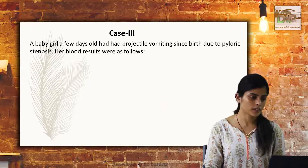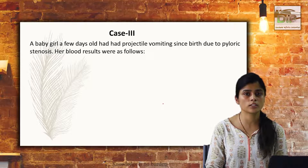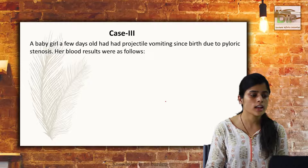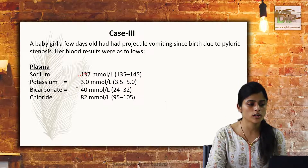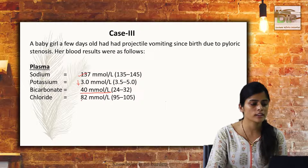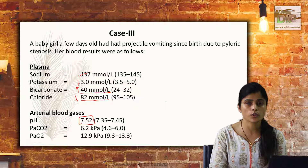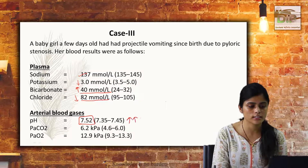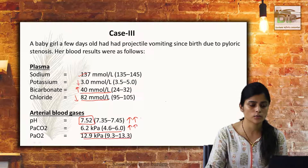The third case: a baby girl a few days old had projectile vomiting since birth due to pyloric stenosis. Her blood results depicted that there was a normal level of sodium, potassium level was slightly decreased, bicarbonate level is high, and chloride level is also decreased. ABG shows that pH is 7.52 — which is raised, indicating alkalosis — PaCO2 is in the increasing trend, and PaO2 is also within the normal range.